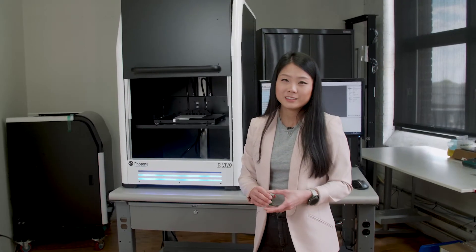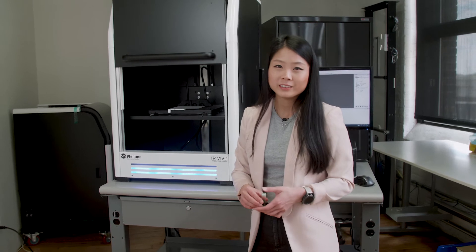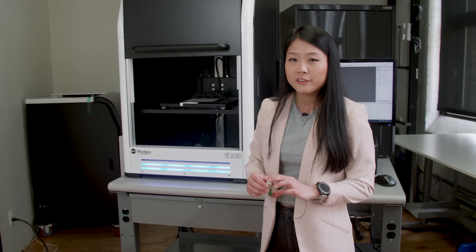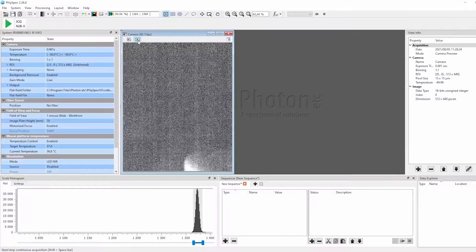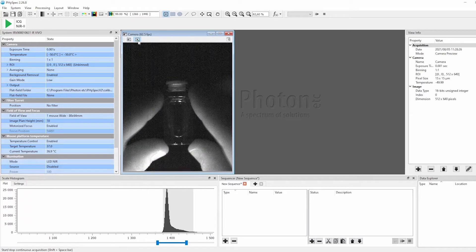So all that being said, let me show you how quickly and easy it is to take an acquisition with the iRevivo. I have a sample here of ICG in a cuvette. ICG is known to have a good emission tail in the near-infrared region.